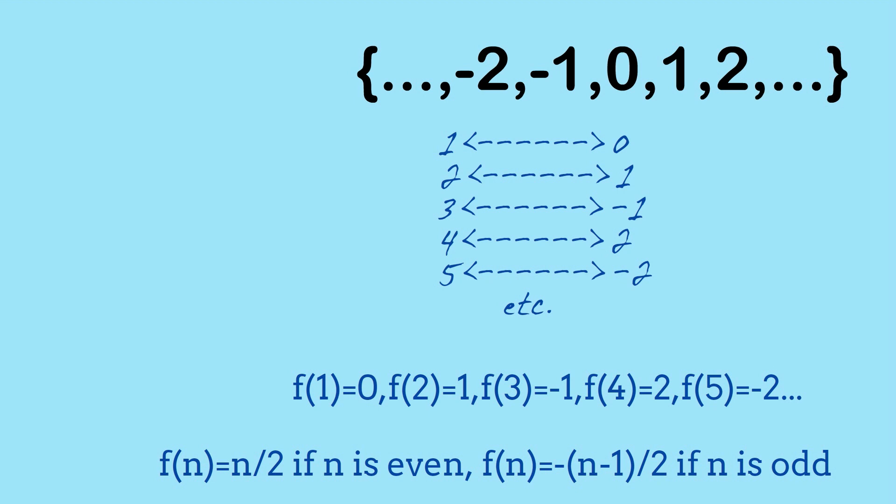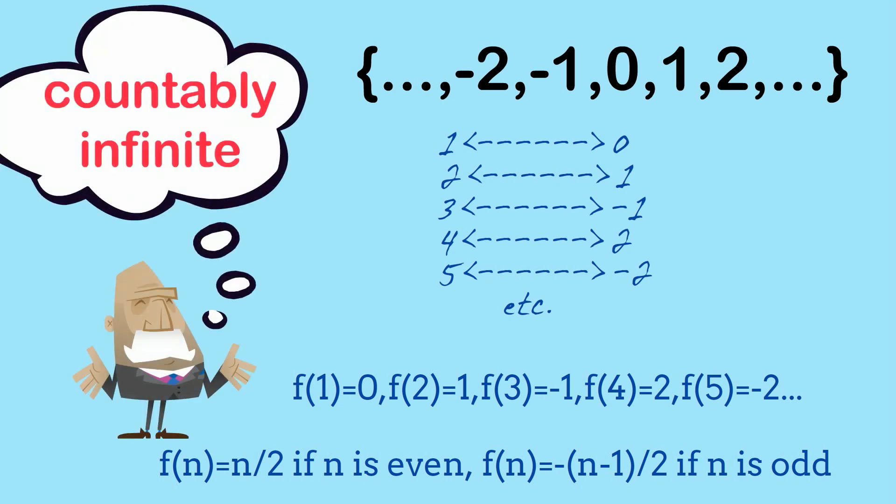So in this case here, where we can find this link between the counting numbers and the set that we're interested in, so that each counting number is linked to a unique element of the set, and each element of the set is linked to a unique element of the counting numbers, we say that this set is countably infinite in size. So there's this concept of countable infinity, and we would regard all of the sets that are countably infinite as having the same size.